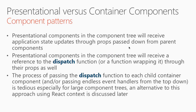Presentational components will still receive their application state updates through their props through the component tree. They're not aware of the application in which they're running — they're just receiving their data through their props as usual. In addition to receiving data they'll also receive a reference to the dispatch function, or some type of function wrapping that dispatch function, through their props as well. This will enable the presentational components to actually trigger some type of action when the user interacts with them. The process of passing the dispatch function and other application state data to each child container component can be a bit tedious. Later on in the course we'll take a look at how we can use React's context feature to pass that down more easily.